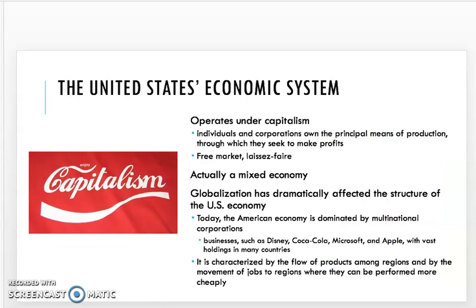Back in 10th grade history, we spent a lot of time talking about capitalism, socialism, and communism. The United States really operates under capitalism; however, there's a lot of government intervention, contributing to the fact that we have a mixed economy. Globalization — the interconnectedness of all our economies — has dramatically affected the structure of the US economy, and the economy is dominated by multinational corporations like Disney, Coca-Cola, Microsoft, and Apple, who have vast holdings in many countries, characterized by the flow of products among all these regions.